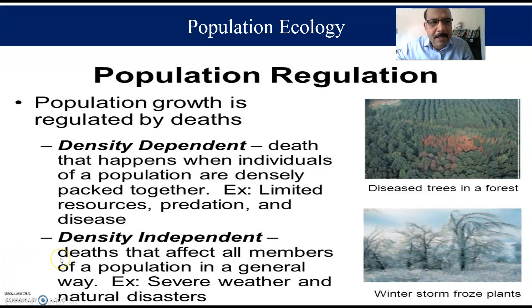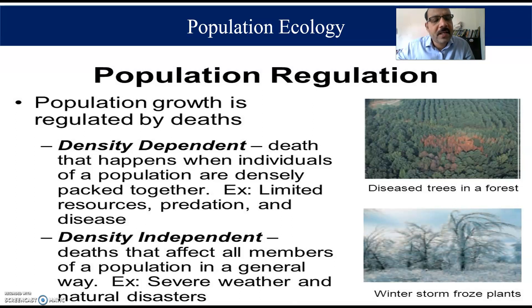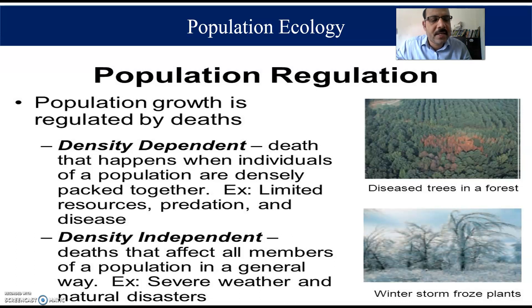The second factor is density independent. Death that affects all members of a population in a general way, regardless of density. Examples include severe weather and natural disasters. These two important factors — density dependent and density independent — influence population regulation.